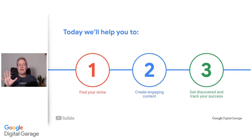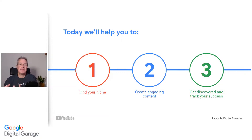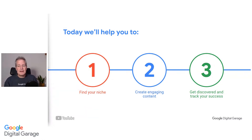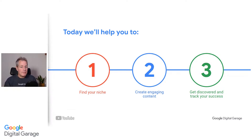We're going to cover three main areas. Firstly, finding your niche — your particular area, what you're passionate about, and who is your audience. Second, creating engaging content: the steps to take when planning and shooting, tips on lighting and so on. Third, get discovered and track your success — once you get started, how you get found and track your success, whether you're creating a channel for fun or to create a revenue stream. We'll look at all the different methods.